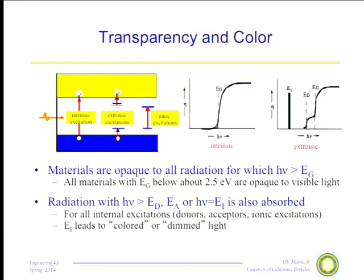There are three such things that can happen. At low energies in a semiconductor or insulator, we can have extrinsic excitations, exciting an electron to an acceptor level or exciting an electron from a donor level into the conduction band. There can be ionic excitations within the band gap, and there can also be intrinsic excitations in which we excite electrons all the way across the band gap.